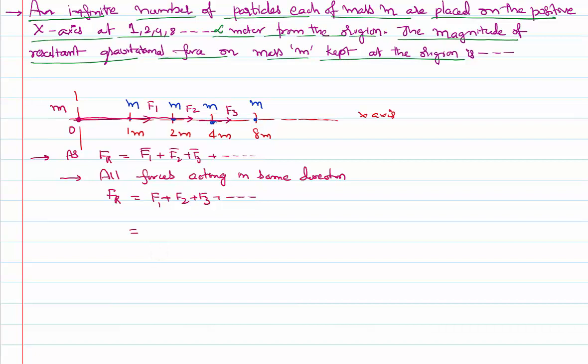What is F1? Between these two masses: G m1 m2 by r square. F2 between these two: G m1 m2 by 2 square. And m1 and m2 are equal: 4 square, 8 square and so on up to infinity. Simplifying this further: G m square...